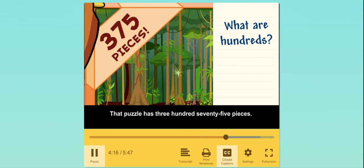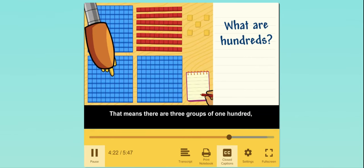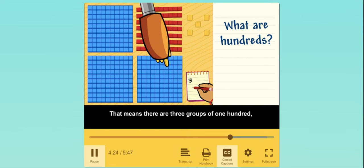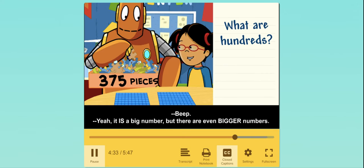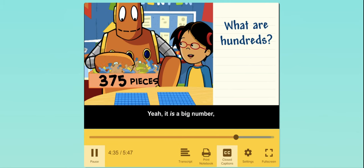That puzzle has 375 pieces. That means there are 3 groups of 100, 7 groups of 10, and 5 ones. So that makes up 375. Yeah, it is a big number.